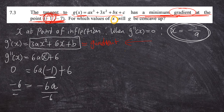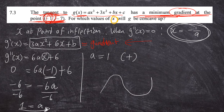Dividing both sides by -6 gives a = 1. Now we know the shape of the graph — since a is positive, the cubic function ends with a smile. Now we can finally solve for x at the point of inflection. We had x = -1/a, and now that a = 1, we substitute back.